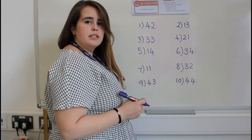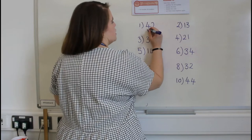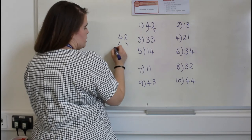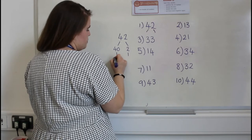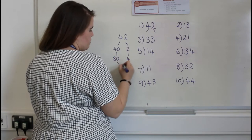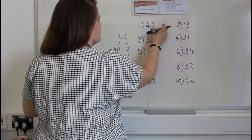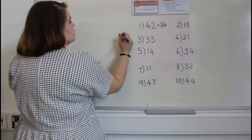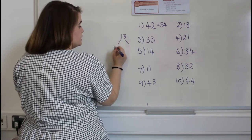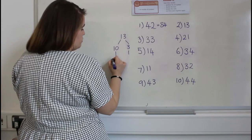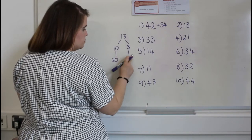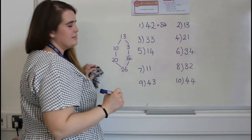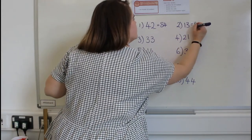Let's see what the answers are. Double forty-two: partition into forty and two, double them to get eighty and four, bring it back together — eighty-four. Let's try thirteen: thirteen partitioned is ten and three, double the ten is twenty, double the three is six, bring it back together — twenty-six. So the answer for double thirteen is twenty-six.